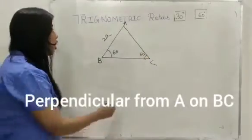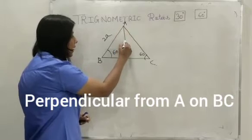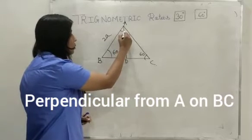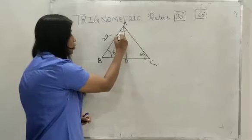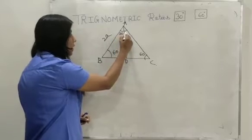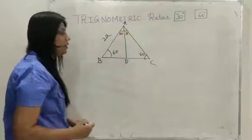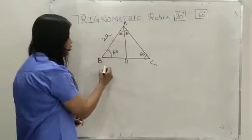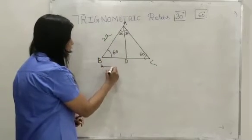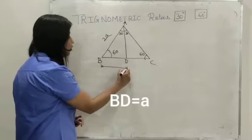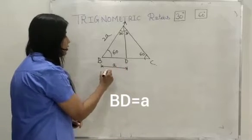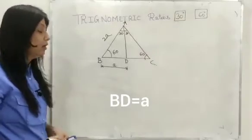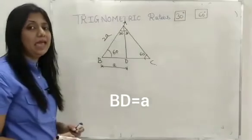If I draw a perpendicular from A on BC, this 60 degree angle is divided into 2 parts — 30 degrees and 30 degrees. Now the total length of BC is 2A, so BD will be half of 2A, that is A.